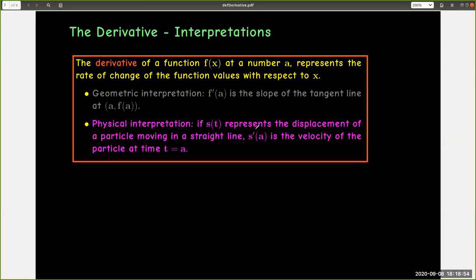For a physical interpretation, if s(t) represents the position of a particle moving in a straight line, then s'(a) is the velocity of the particle at time t = a.